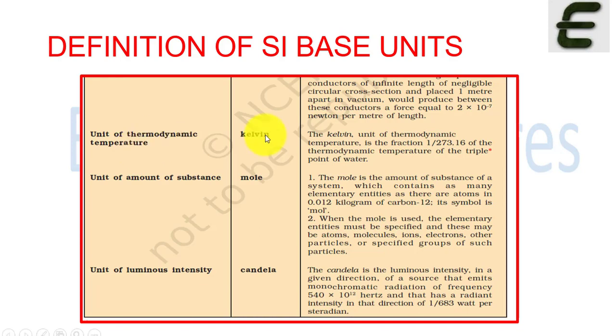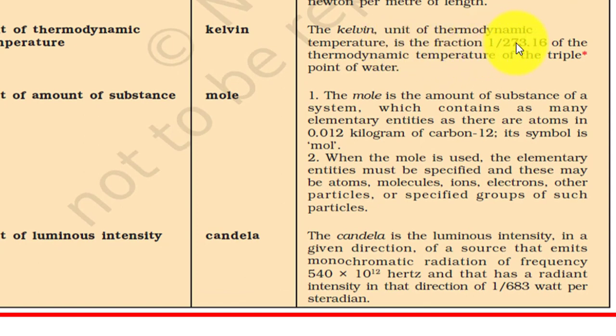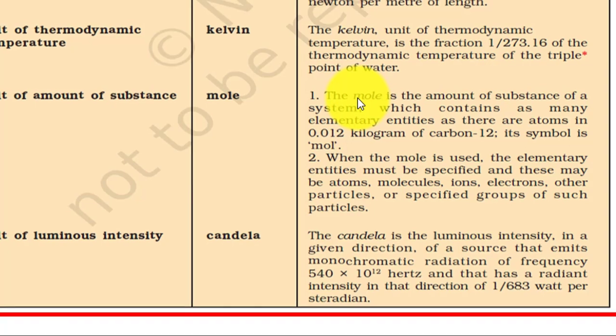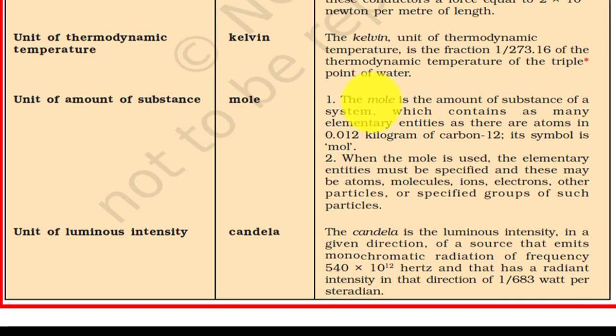The unit of thermodynamic temperature is kelvin, K. It is the fraction 1/273.16 of the thermodynamic temperature of the triple point of water. What is the triple point of water? It's where water exists in three states - as solid, liquid, and gas. Any substance's triple point is the temperature and pressure at which it exists in three phases in thermodynamic equilibrium.